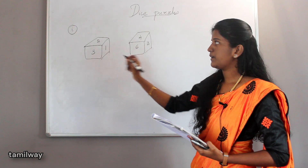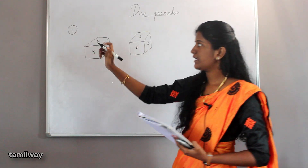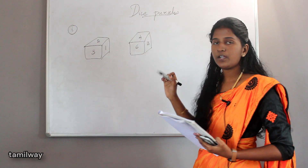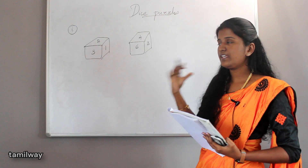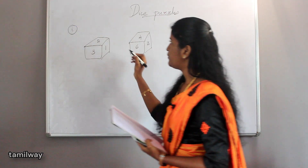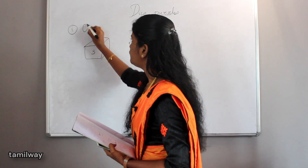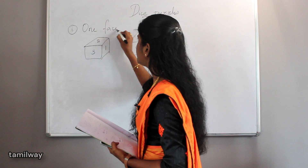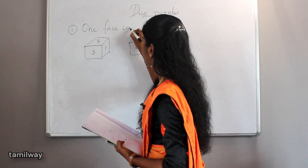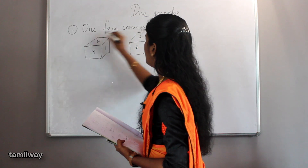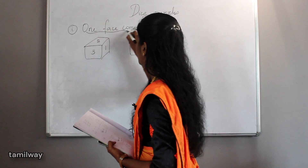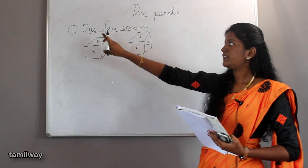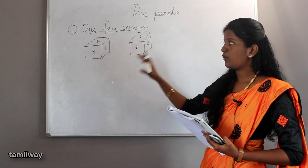One face common. The first trick is: when we take a couple of cubes, we check how many faces are common. Here there is one face common in each pair.